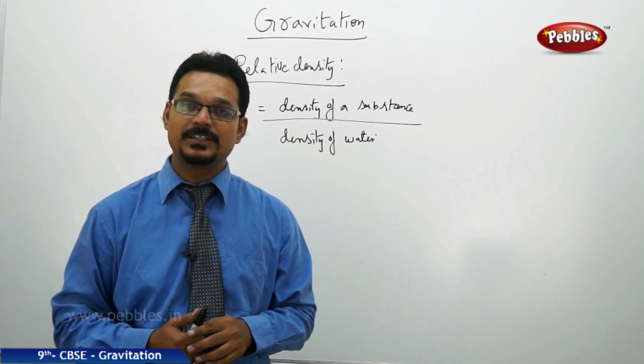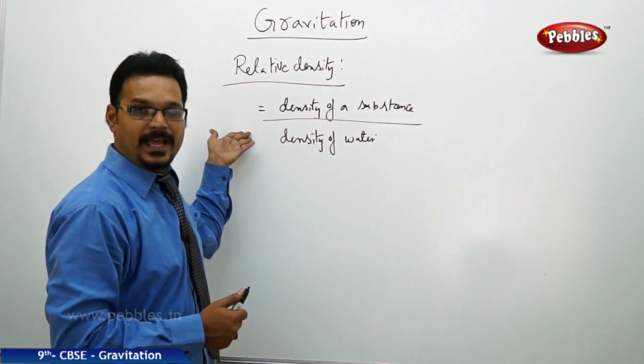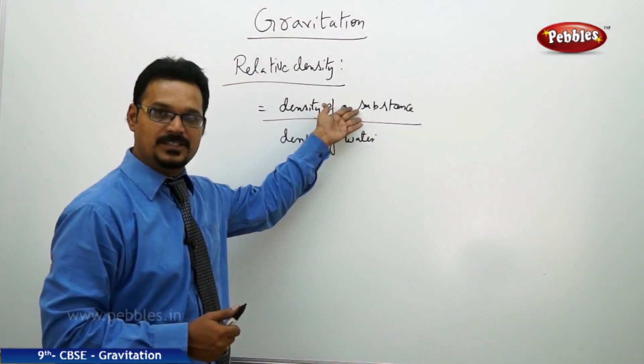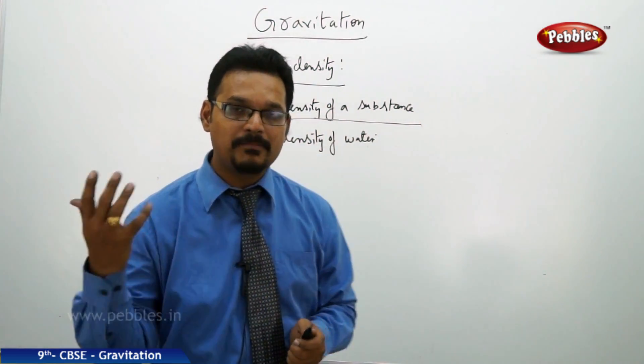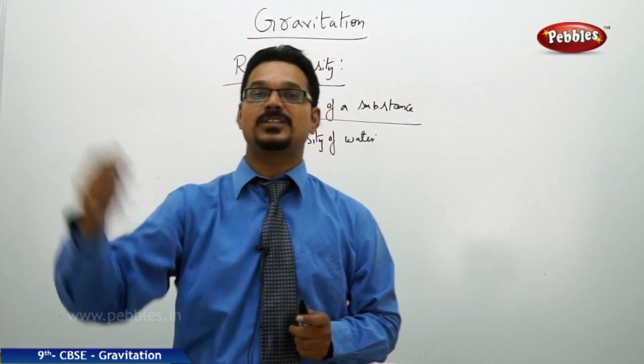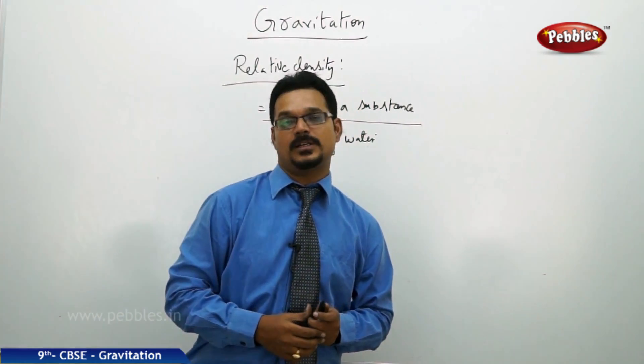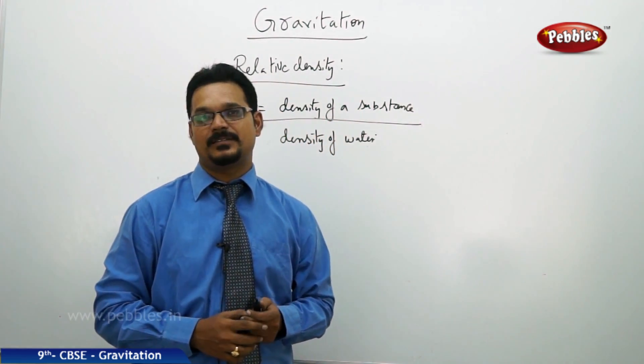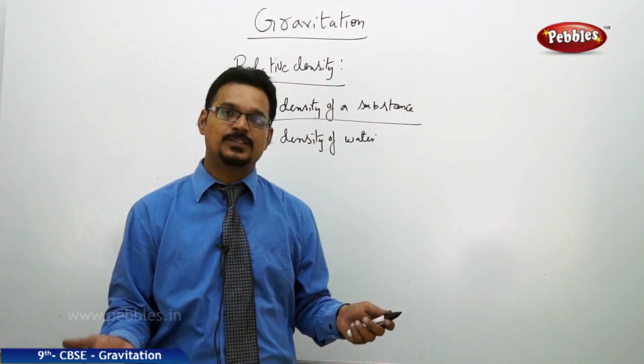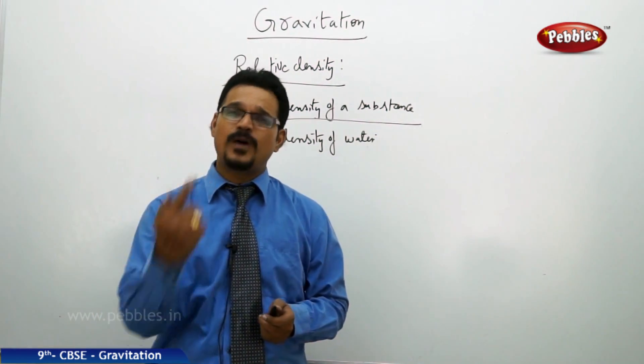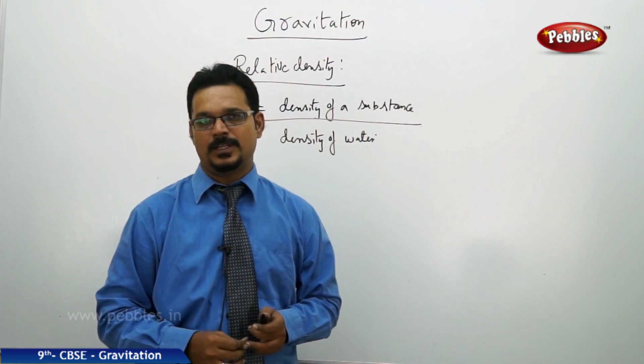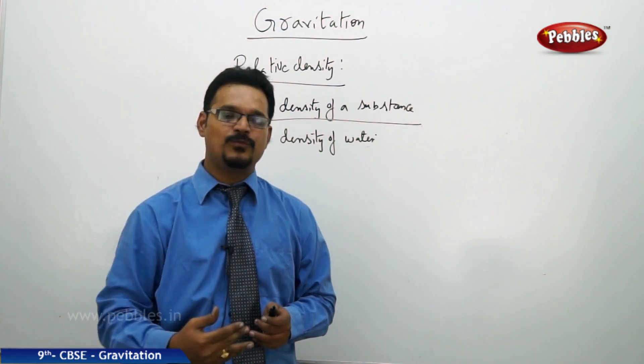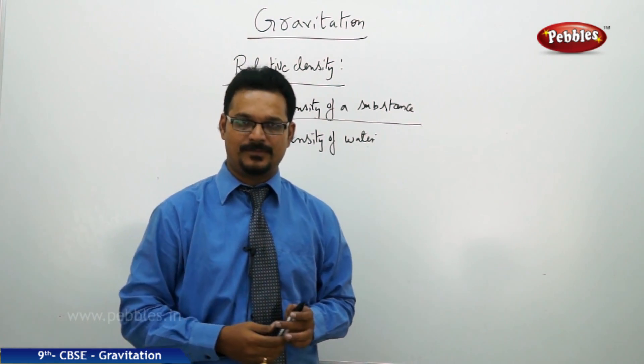You know what is relative density? Relative density is defined as the density of a substance with the density of water. That means we are comparing the density of substance with the density of water. Why we have taken density of water? Guess. Yeah, the answer is very simple. Density of water is 1 gram per cc or 1 gram per centimeter cube. So as it is 1 in denominator, you get 1. So it is easy to calculate.